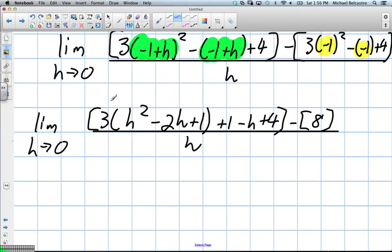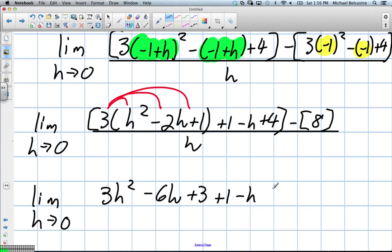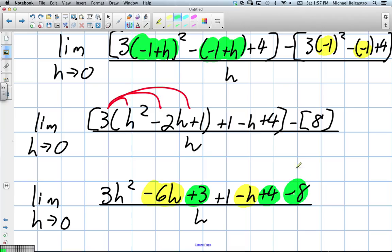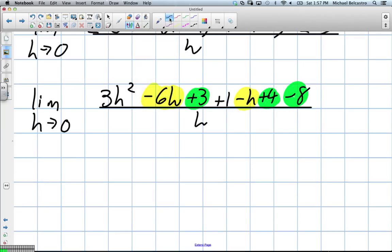So let's distribute now this 3 and try to collect any like terms we can. Limit of h that approaches 0. This becomes 3h squared minus 6h plus 3 plus 1 minus h plus 4. And then minus 8. Okay, so we've dropped all those brackets. Everything's able to collect all of our like terms. So let's get like terms here. I've got this h value and this h value. And I've got some constants which I'm going to put together.